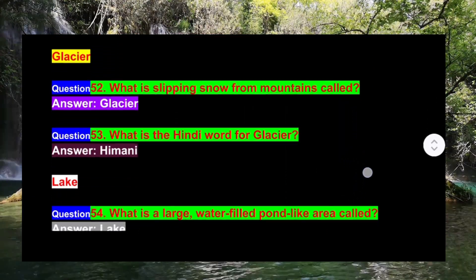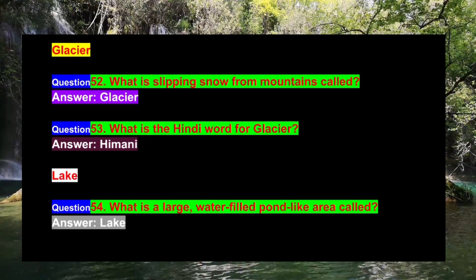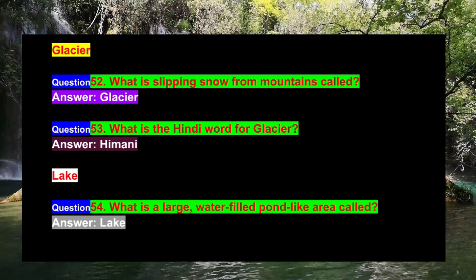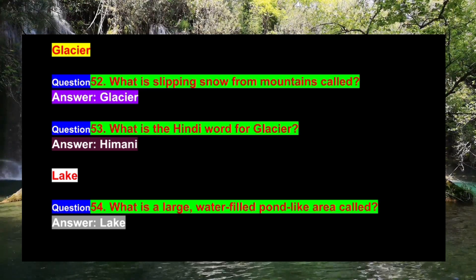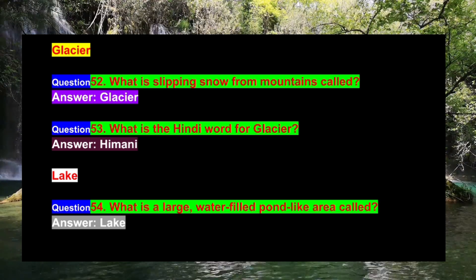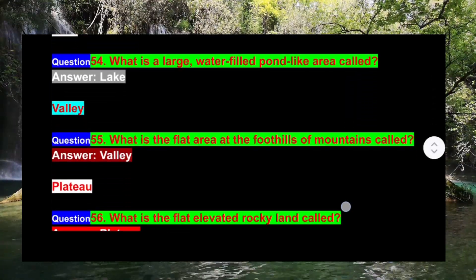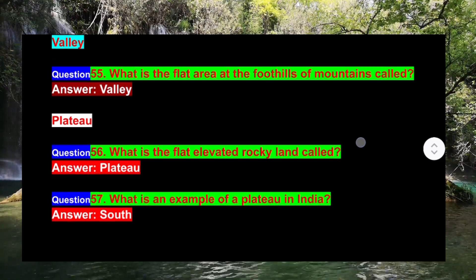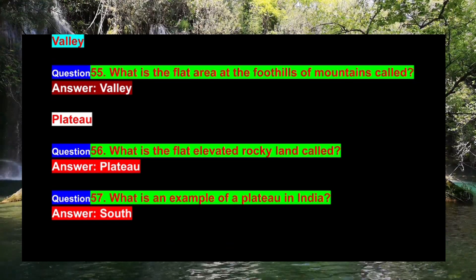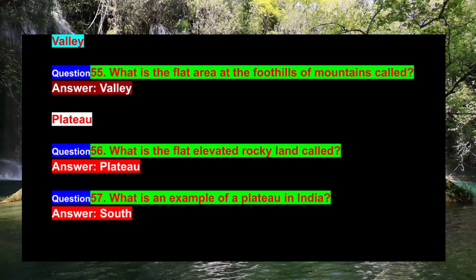Question 52: What is slipping snow from mountains called? Answer: Glacier. Question 53: What is the Hindi word for glacier? Answer: Himani. Question 54: What is a large water-filled pond-like area called? Answer: Lake. Question 55: What is the flat area at the foothills of mountains called? Answer: Valley.